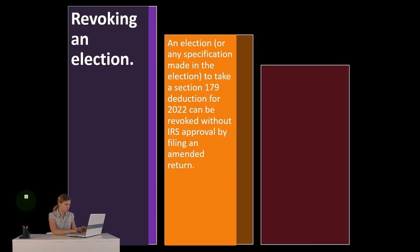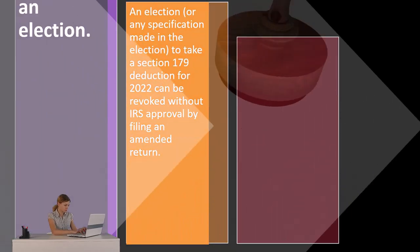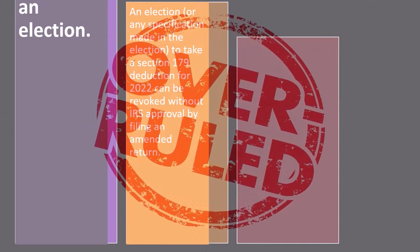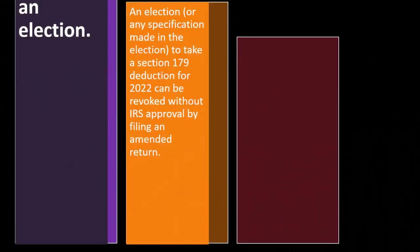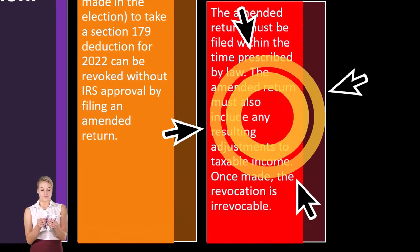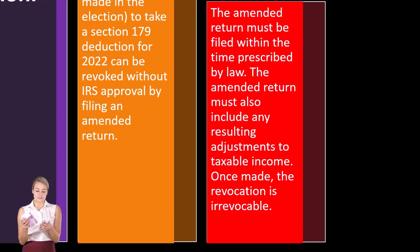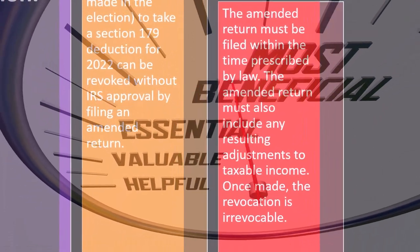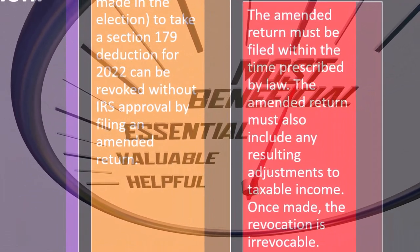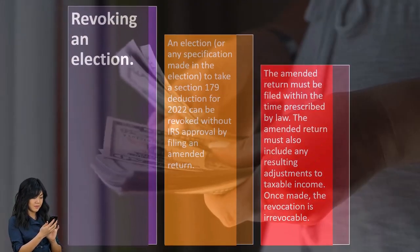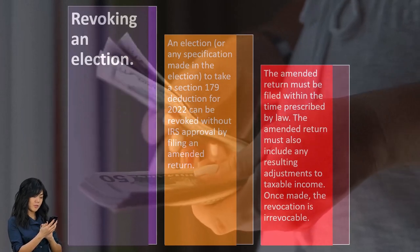Revoking an election: Is it possible to revoke the election? An election or any specification made in the election to take a Section 179 deduction for 2022 can be revoked without IRS approval by filing an amended return. You might do this if you elected the 179 deduction and later found it wasn't beneficial, or if you didn't qualify and need to correct the situation. The amended return must be filed within the time prescribed by law and must include any resulting adjustment to taxable income. Once made, the revocation is irrevocable.